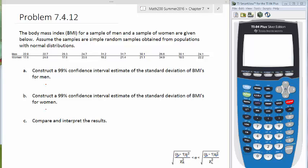This is a problem from section 7-4. The body mass index for a sample of men and a sample of women are given below. Assume the samples are simple random samples obtained from populations with normal distributions. Here's the data for our men and women's BMIs.